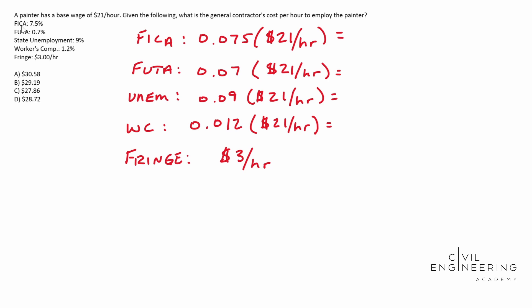So let's go ahead and multiply these guys out. This FICA one ends up being $1.575. The FUTA, you end up with $0.147. The unemployment, you end up with $1.89. And then we have for our workers' workman's comp, this stuff ends up being $0.252. And then we have our fringe benefits there of $3. So our total extras, so our extra on top of our paycheck is going to be whenever you add all that stuff up, you end up with $6.86.